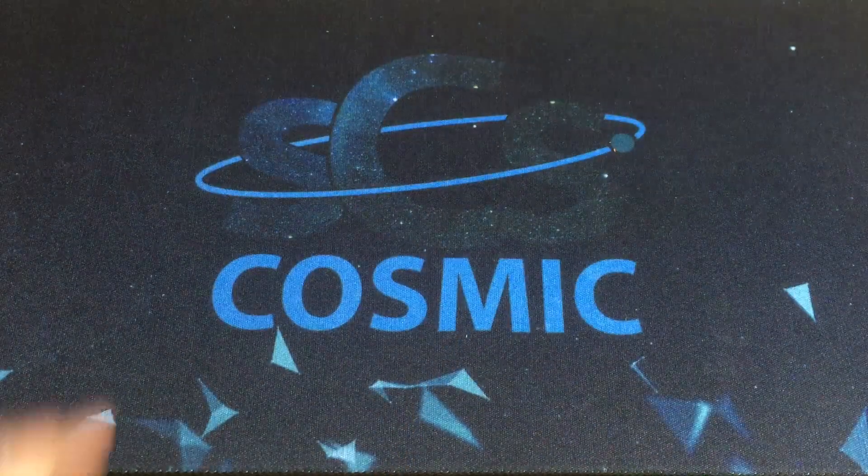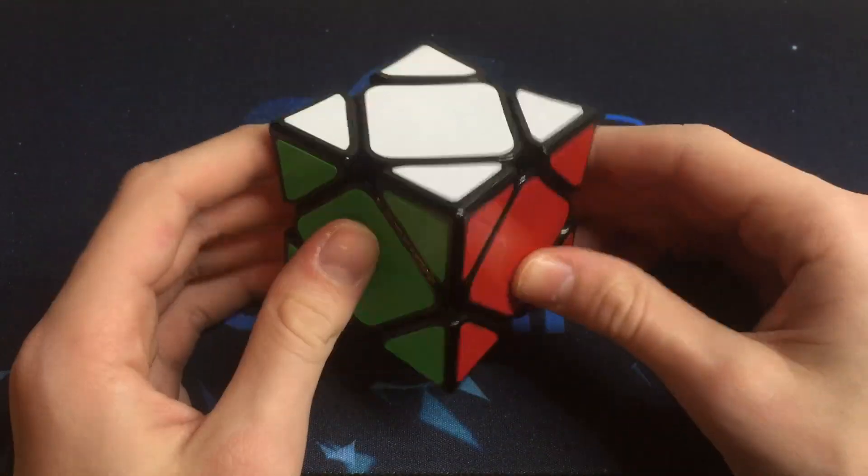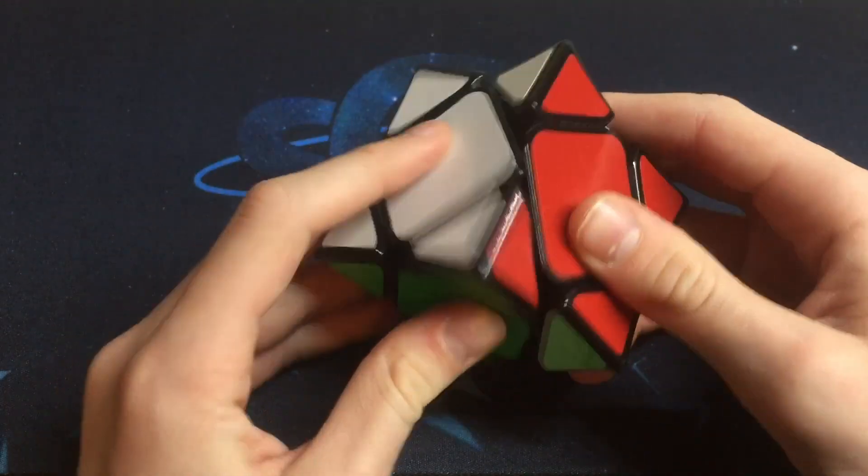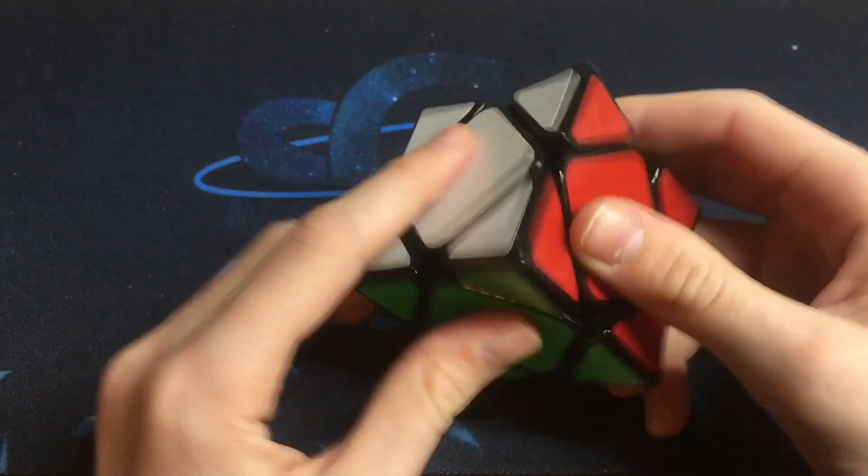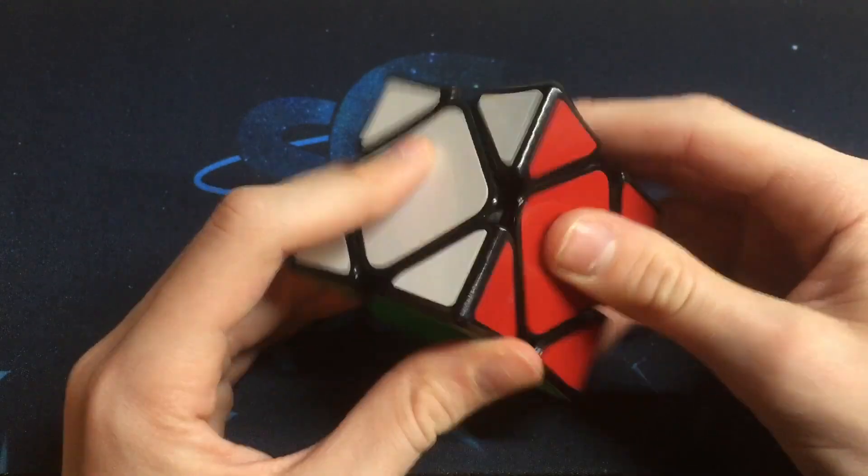Okay, so we're going to move on to my skewbs now. I have 4 of these. This is a normal Wingy. Not very good. It's black, not stickerless like the others. And I just feel like it's not as good as the others. It turns very brittle and I don't like it.